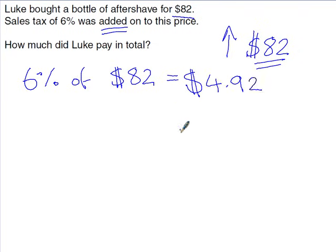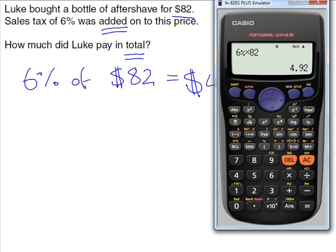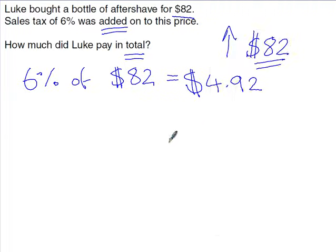Don't leave $4.92 as your final answer — go back and read the question. It asks how much Luke paid in total, so add the tax to the original price: 82 + 4.92 = $86.92. If a money answer has more than two decimal places, always round to two decimal places.